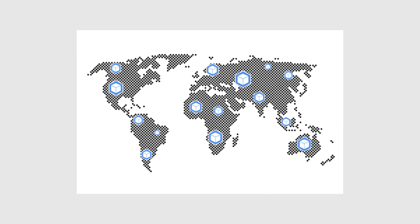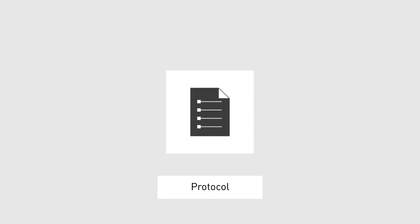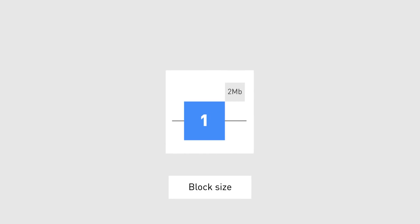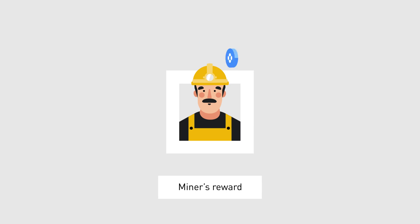Since cryptocurrencies are decentralized networks, all participants in the network, known as nodes, need to follow the same rules in order to work together properly. That set of rules is known as a protocol. Typical rules in a protocol include the size of a block on a blockchain, the rewards miners receive for mining a new block, and many more.